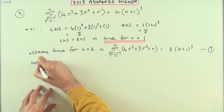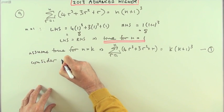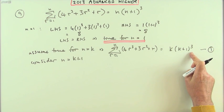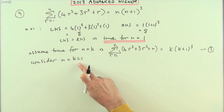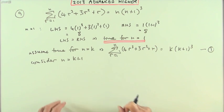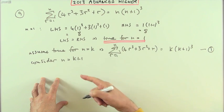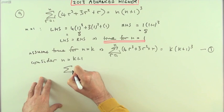Now consider n equals k plus 1, the next step. If it's true at n equals k, does that make it true at k plus 1?